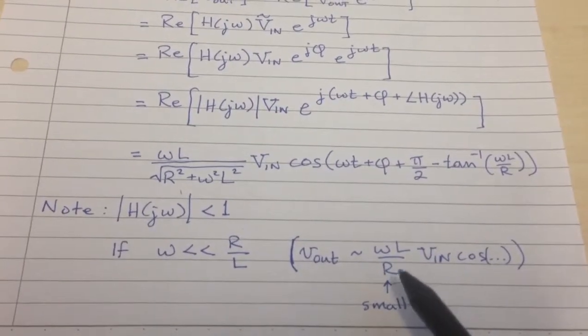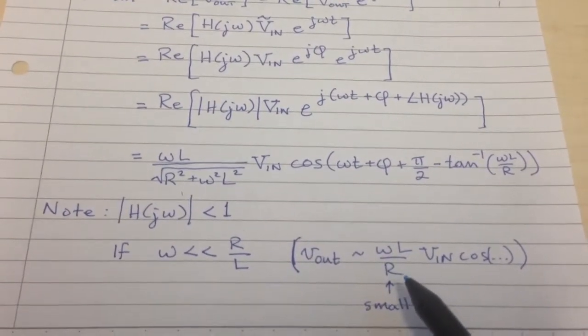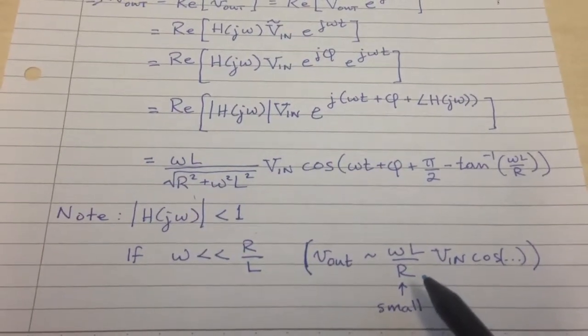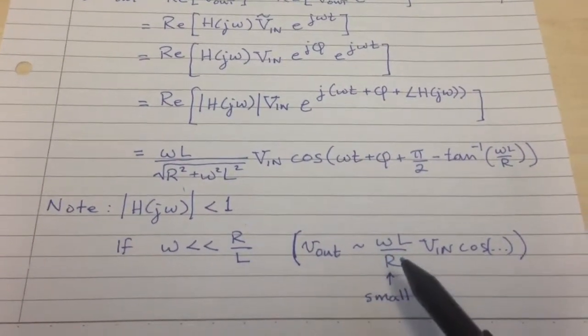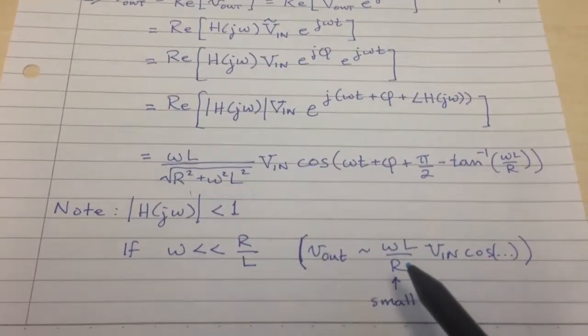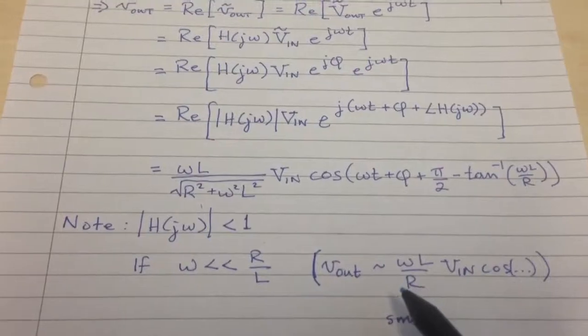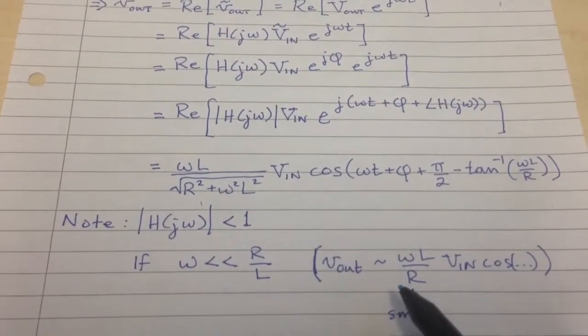This is an approximation to it. You can work on that to prove that, but it's not too hard. Just do a series expansion. And so basically, you end up with V_out being a very small number for low frequencies. So that means that low frequencies get attenuated more than high frequencies, and that's what makes it a high-pass filter.